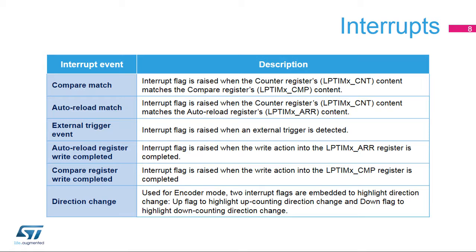These two interrupts are useful in migrating the overhead of polling on the status of writing to these registers when the peripheral core clock is too slow compared to the APB interface clock. The up and down direction change interrupts are raised when the encoder mode function is enabled and the counting direction changes from up to down or vice versa. The counting direction of the low-power timer's counter reflects the rotation direction of the quadrature sensor.